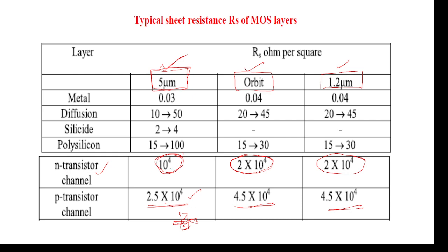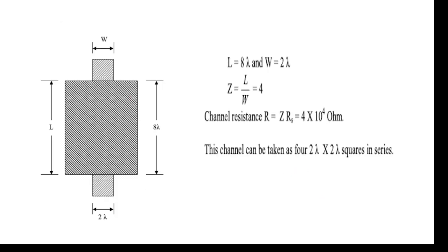To summarize: for N-MOS transistor at 5 micrometer design rules it is 10⁴ ohms; for 2 micrometer or orbit design rules it is 2×10⁴ ohms; for P-MOS transistor at 5 micrometer it is 2.5×10⁴, and at 1.2 micrometer it is 4.5×10⁴ ohms. For example, consider this transistor symbol — poly over N-diffusion — this is an N-MOS transistor.